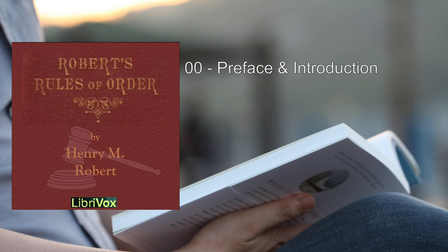Introduction. Parliamentary Law refers originally to the customs and rules of conducting business in the English Parliament, and thence to the customs and rules of our own legislative assemblies. In England, these customs and usages of Parliament form a part of the unwritten law of the land, and in our own legislative bodies they are of authority in all cases where they do not conflict with existing rules or precedents. But as a people we have not the respect which the English have for customs and precedents, and are always ready for innovations which we think are improvements, and hence changes have been and are being constantly made in the written rules which our legislative bodies have found best to adopt.